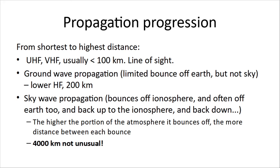The progression of propagation for distance: our higher frequencies — UHF, VHF — are usually limited to about 100 kilometers, considered line of sight. At some lower frequencies we've got ground wave propagation — a limited amount of bounce off the Earth but not the sky — and you'll get about 200 kilometers with that. Sky wave propagation is where we're bouncing off the ionosphere, often off the Earth too, and back up and down. The higher the portion of the atmosphere that bounces the signal, the more distance between each bounce. We can actually get 4,000 kilometers on a single bounce — that's not unusual.